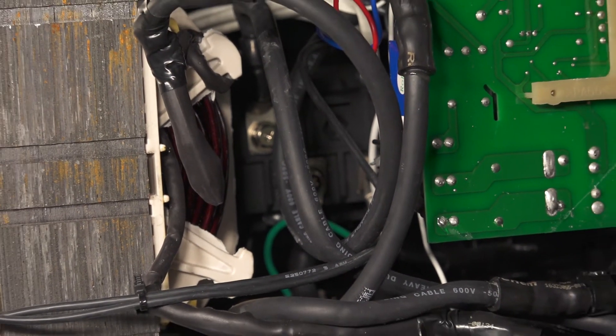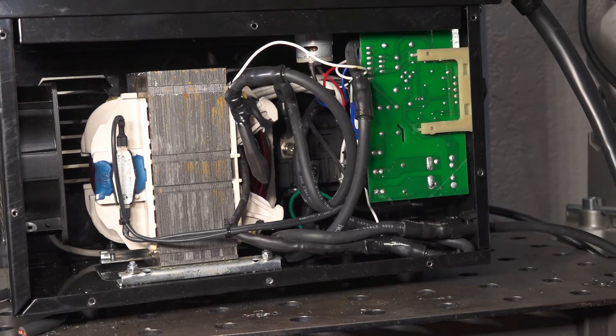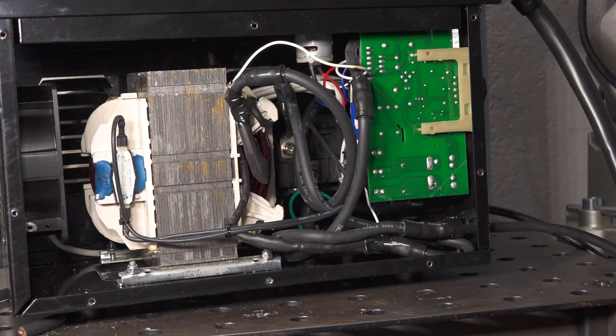Okay so I'm all finished up, you can probably just barely see the rectifier there kind of behind all those wires. It is just screwed to the side panel back there. So everything's wired up and ready to go, I just have to put this last side panel on the welder and I will fire it up and do some testing, see how it does.